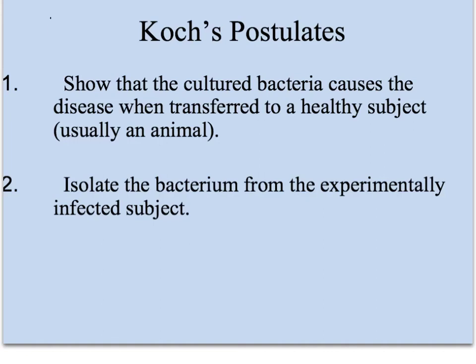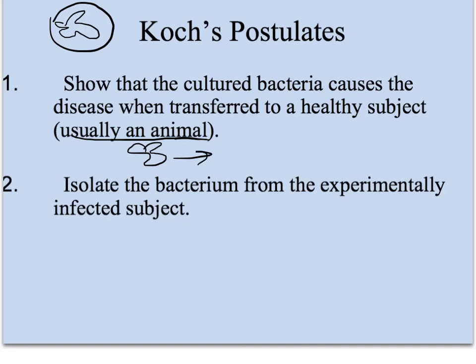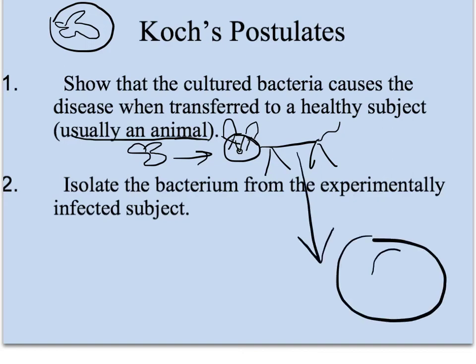Number three: we have this bacteria growing on a plate, and we are going to inject it into some healthy subject — usually an animal, we'll go with a mouse. We put this bacteria in the mouse and the mouse gets the staph infection. Once the mouse is sick, we isolate the bacteria again and grow it on a plate. Once you've done all four of these things, you have proved that that particular bacteria causes that particular disease.